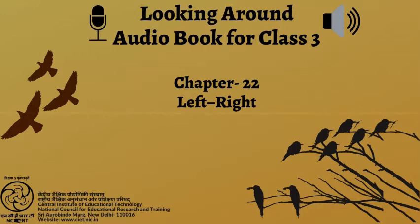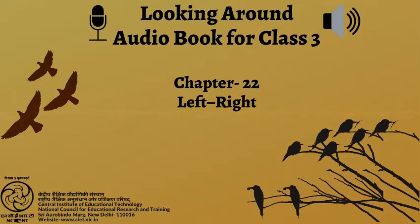Given here is the picture of a hand. Place your hand on it so that the palm faces the paper. Your thumb and fingers should be placed on those drawn in the picture. Page number 147. The hand which fits on the hand in the picture is your right hand. Place your other hand on a page in your notebook and trace its outline with your right hand to get a picture. The hand whose outline you have just traced is your left hand. Let us sing a song.